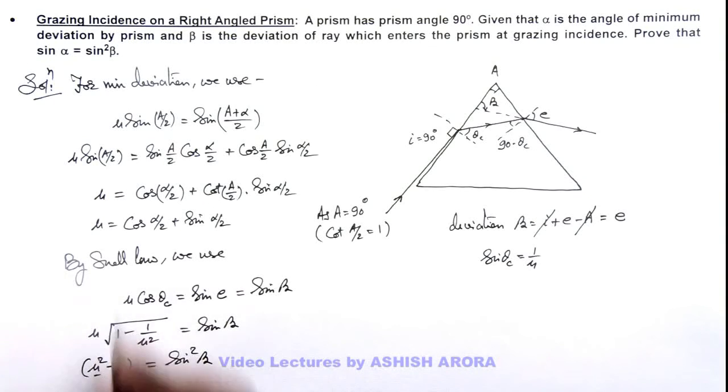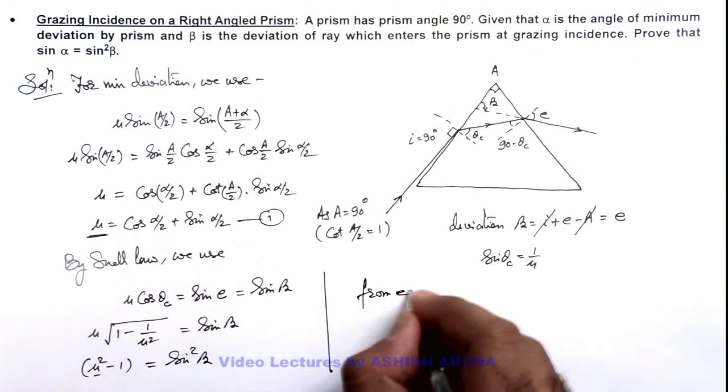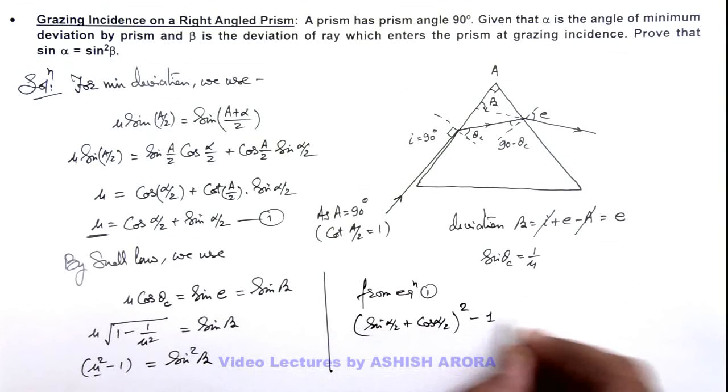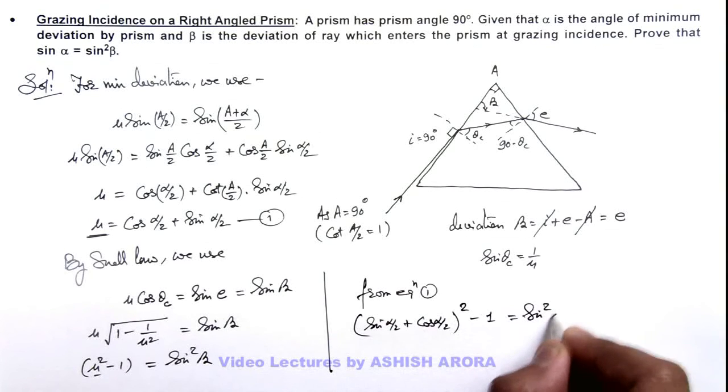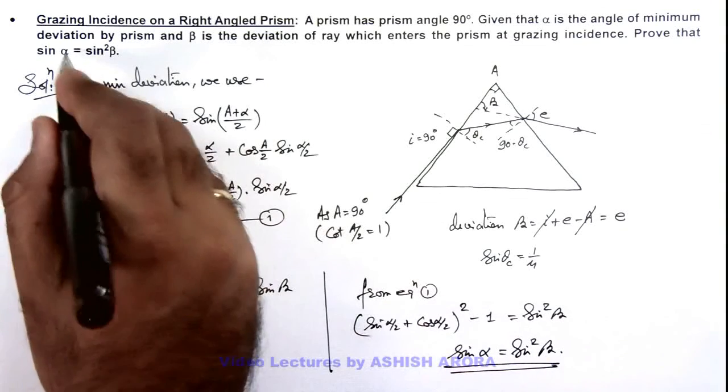Here we can substitute the value of mu from equation 1. Here we can write sine alpha by 2 plus cos alpha by 2 whole squared minus 1 is sine squared beta. If we further open it, sine squared alpha by 2 plus cos squared alpha by 2 gets cancelled out with 1. The remaining factor is 2 sine alpha by 2 cos alpha by 2 which can be written as sine alpha, that is equal to sine squared beta. This is what we are required to prove.